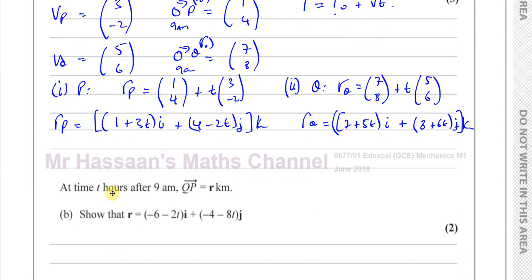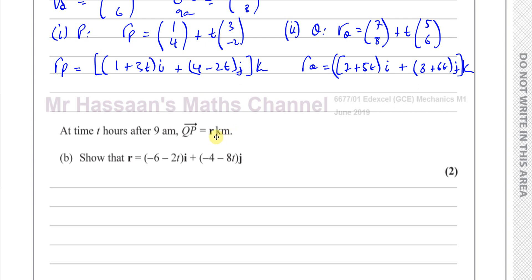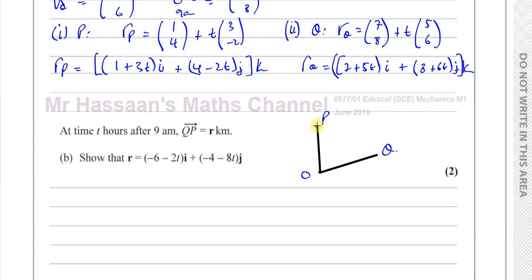Part B says: at time T hours after 9am, the vector from Q to P is R kilometres. Show that R = (−6 − 2T)i + (−4 − 8T)j. So R here is not the position vector — it's the vector from Q to P. If O is the origin, P is one ship and Q is another, then the vector that takes you from Q to P is what this represents.